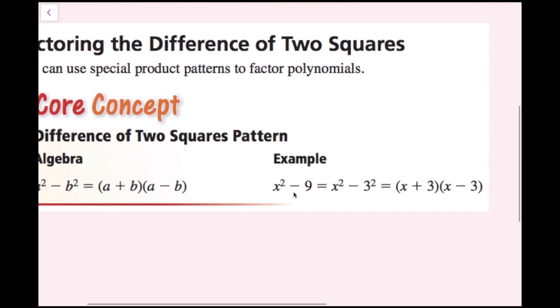The math example here — we have two squares, the difference of two squares. So we can just rewrite x squared minus 9 as x plus 3 times the quantity x minus 3.